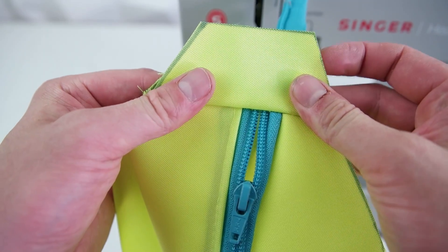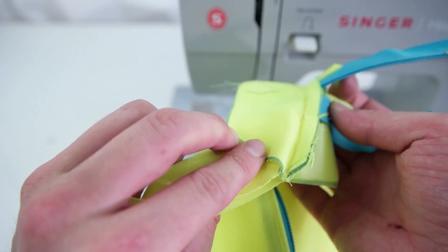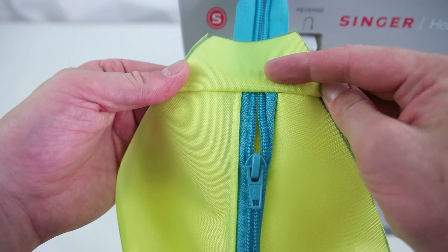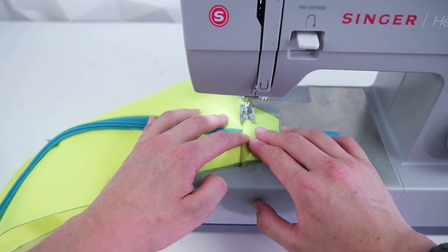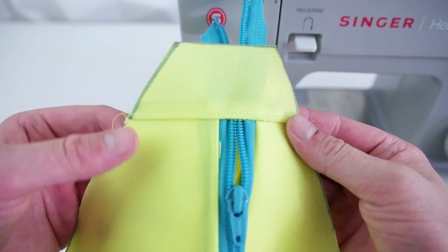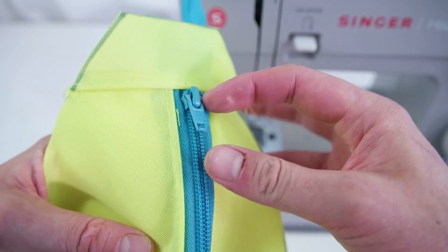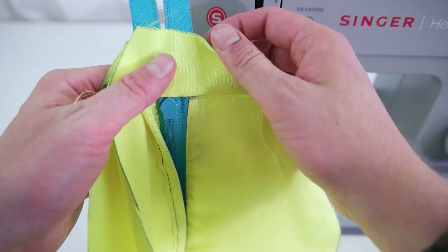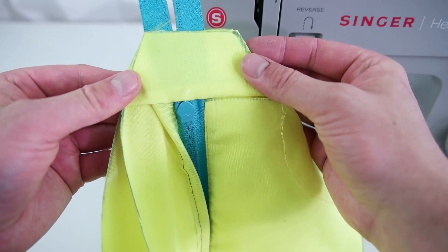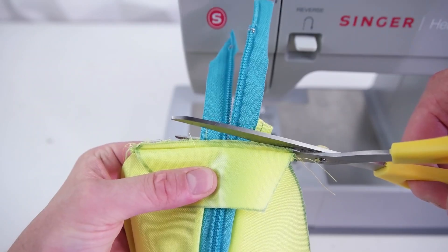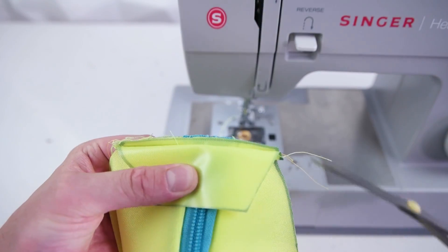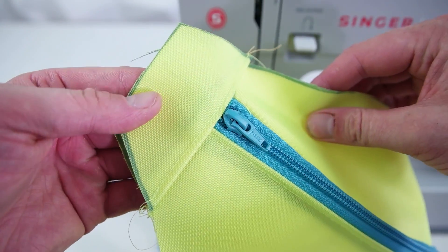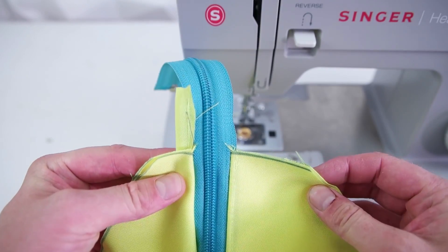Next, fold the outside flap up but leave the inside flap down. You're going to add a top stitch just to the outside front. Now you can trim that zipper off. Then repeat this process for the other side.